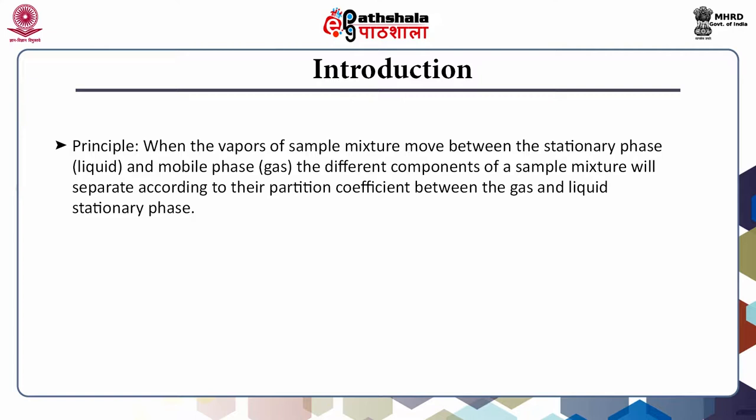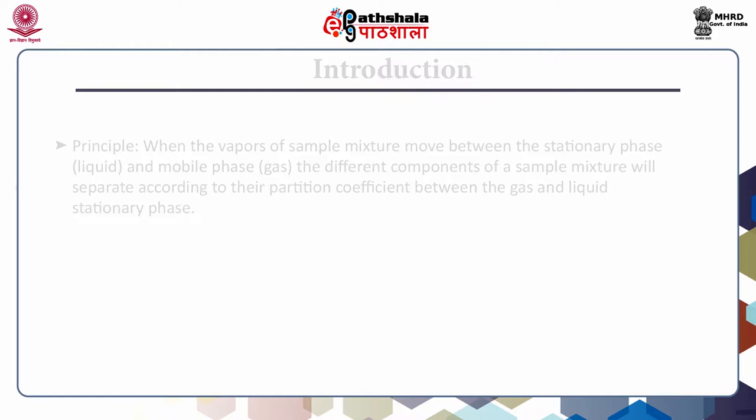This technique is based on the principle of partition chromatography, wherein the components are partitioned between the liquid stationary phase and a carrier gas mobile phase. It involves two active parts: one is the mobile phase, which is an inert gas, and another is the stationary phase, which is a liquid coated on a solid support like silica. The basic requirement of GLC analysis is that the sample should be in vaporized state at a temperature below 350°C. The components of the vaporized sample are fractionated and separated according to partition coefficient between the gas and liquid stationary phase.